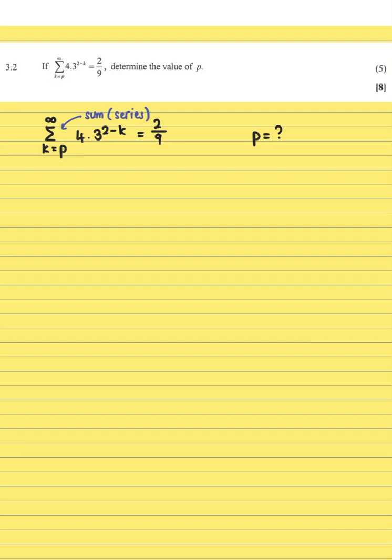What k equals p at the bottom of the sigma notation means is that p is the value of k in your first term. In your second term k is p plus 1, and in your third term k is p plus 2. For each consecutive term you add 1 to that k value. That goes to infinity, and they're saying the sum is 2 over 9.